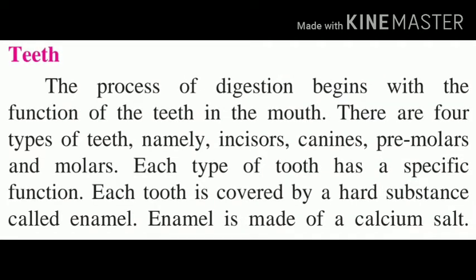Starting with the teeth, the process of digestion begins with the function of teeth in the mouth. There are four types of teeth: the incisors, the canines, premolars, and molars. Each type of tooth has a specific function. Each tooth is covered by a hard substance called enamel. Enamel is made up of calcium salts and also contains phosphorus, which is why the teeth are hard. The teeth play an important role in chewing, crushing, and tearing the food.